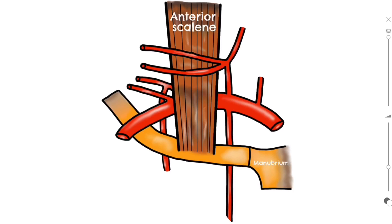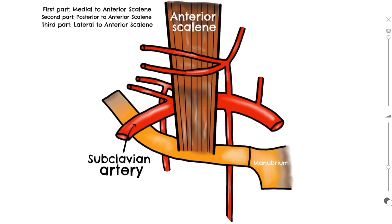Functionally, the anterior scalene is responsible for elevating the first rib during deep inspiration and also laterally flexing the neck to the same side. The subclavian artery passes right behind it, so we can use the anterior scalene as a landmark to split the subclavian into three parts. The first part runs behind the manubrium to the medial border of the anterior scalene. The second is hidden behind the anterior scalene but in front of the scalene mass. The third runs from the lateral border of the anterior scalene to the lateral border of the first rib, where it becomes the axillary artery.